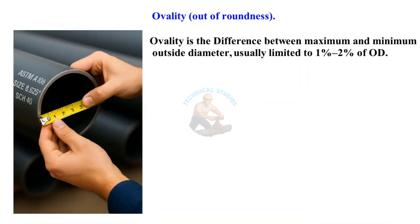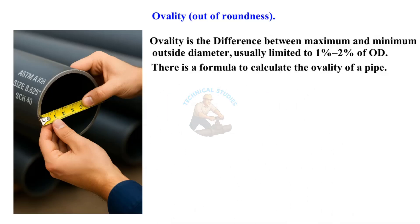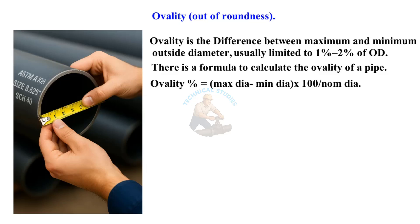Ovality is the difference between maximum and minimum outside diameter, usually limited to 1% to 2% of OD. There is a formula to calculate the ovality of a pipe: Ovality (%) = (maximum diameter − minimum diameter) × 100 ÷ nominal diameter.